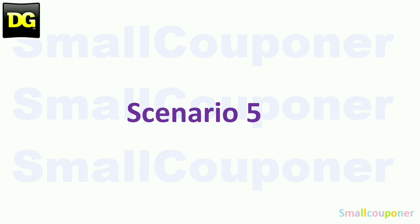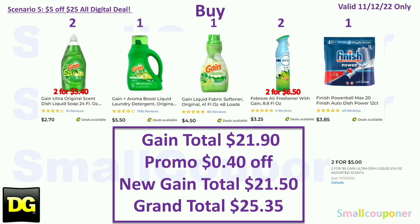Scenario 5. You'll buy two Gain dish for $5.40, one Gain liquid for $5.50, one Gain for $4.50, two Febreze Gain-scented at $3.25 each for $6.50, and one Finish Powerball for $3.85 — note the price increased from $3.65. Your gain total is $21.90. With the Gain dish two-for-$5 sale taking off $0.40, your new gain total is $21.50. Adding the Finish Powerball brings your grand total to $25.35.